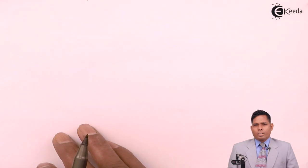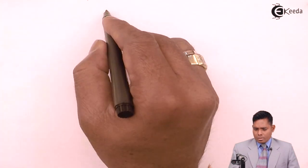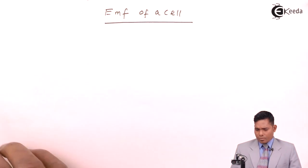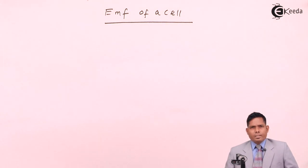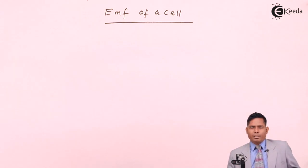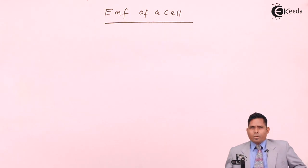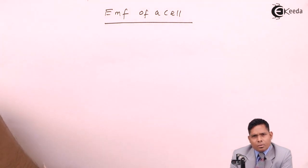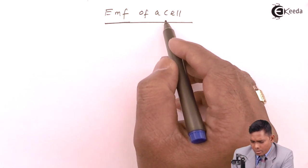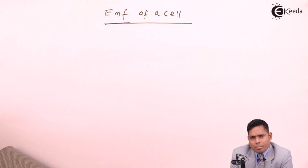Today we will discuss the EMF of a cell and its internal resistance. A cell is a device which has two terminals: a positive terminal at higher potential and a negative terminal at lower potential. EMF stands for electromotive force. It is not a force despite the name — it is basically the energy spent in moving a unit charge once throughout the circuit.